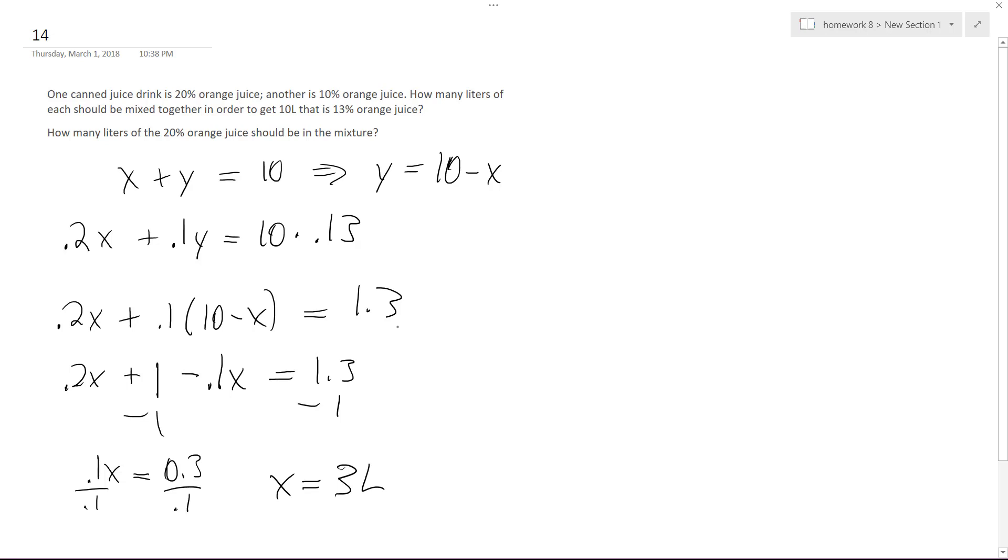So that's 3 liters of the 20% mixture. So we've already answered the question, but I'm going to keep going. Y is going to be equal to then, so since there was 10, it's going to be 7 liters. So 3 liters, 20% juice, and then 7 liters of 10%.